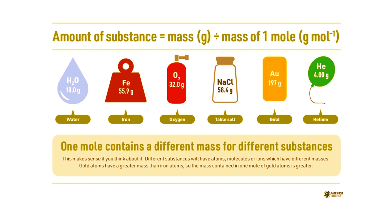The number of particles in a mole is called Avogadro's number, after Italian scientist Amadeo Avogadro, who lived from 1776 to 1856. He didn't introduce the mole, but he made other important contributions to chemistry, for which later scientists wanted to honor him. When the mole joined the international system of units in 1971, it was defined as the amount of substance that contained as many elementary entities as there were in 0.012 kilograms of the most common form of carbon, called carbon-12.